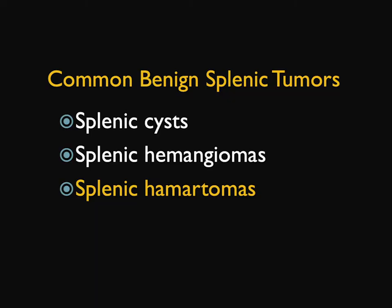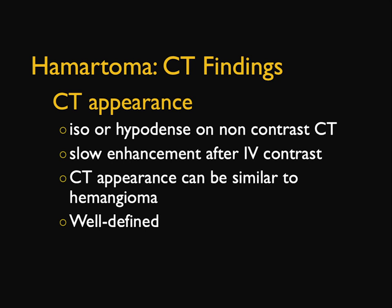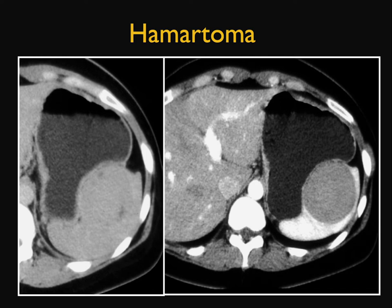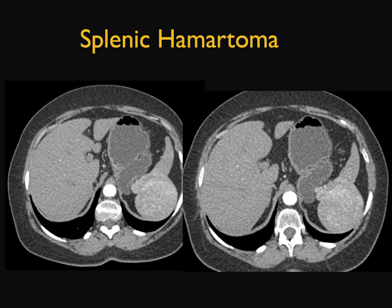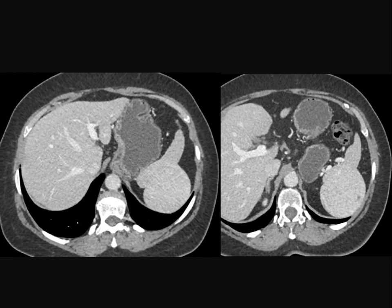Now, hamartomas — they're uncommon, an anomalous mixture of splenic elements. They're usually solitary and more common in tuberous sclerosis. The CT appearance is hypodense or isodense on non-contrast, with enhancement with contrast, and very well-defined — in fact, better defined than hemangiomas. The other thing about them is they tend to protrude beyond the spleen. You can see how the lesion kind of bulges out with well-defined sharp margination. The enhancement is fairly homogeneous, vessels are stretched, then it washes out — a very exophytic appearance. Hemangiomas are always internal; this exophytic appearance is really suggestive of a hamartoma.